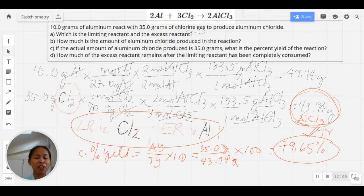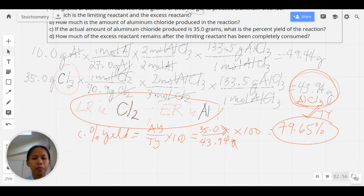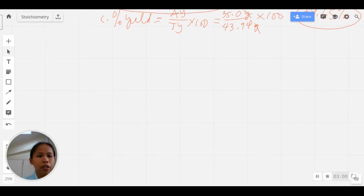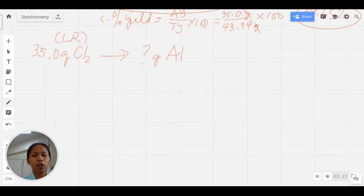That's going to be a very simple stoichiometry calculation because it's just going to be a mass-to-mass calculation from our 35.0 grams CL₂ to knowing the grams of aluminum that will be needed. Our calculation is from our LR amount to our ER so that we will really know how much is the amount needed.